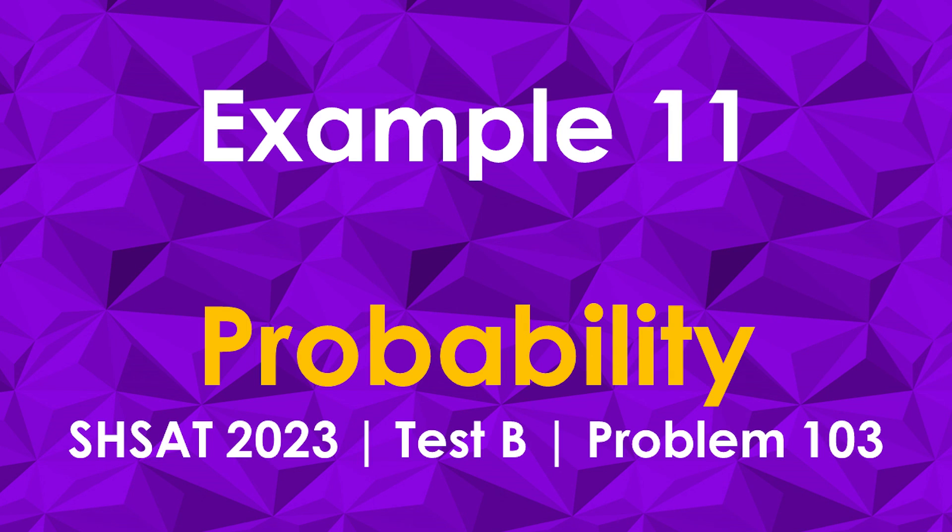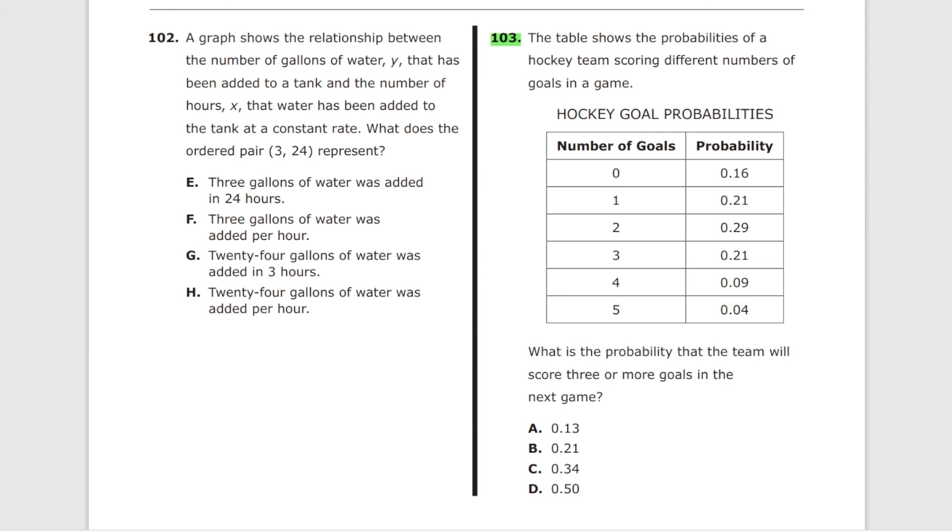Final problem. Problem 103. The table shows the probabilities of a hockey team scoring different numbers of goals in the game. What is the probability that the team will score three or more goals in the next game? It's actually, conversely, one of the easiest problems here. Three goals is 0.21. Four goals is 0.09. Five goals is 0.04. You add this up, you get 0.30. You add this up, that's 0.34. That's C, which obviously stands for 34%.